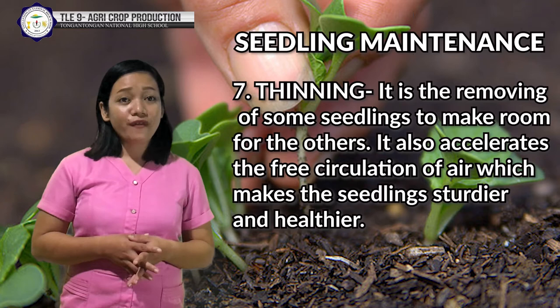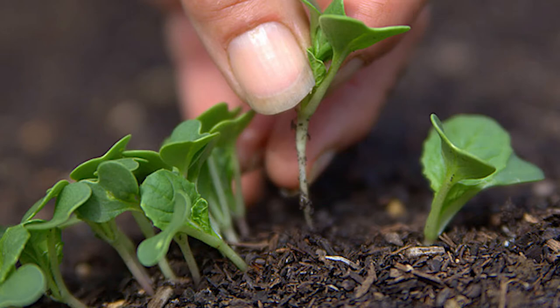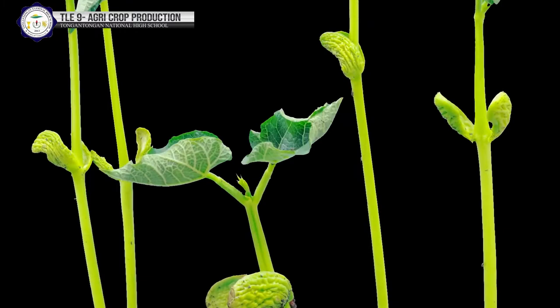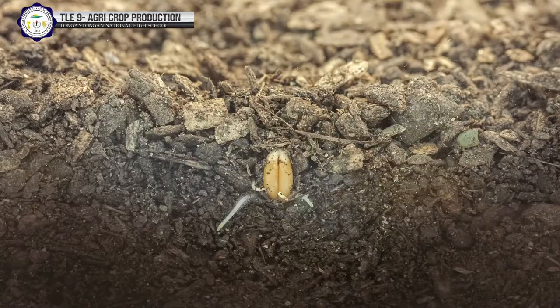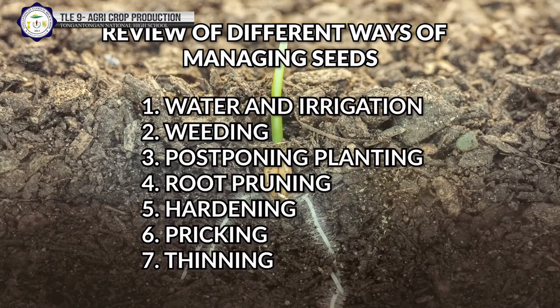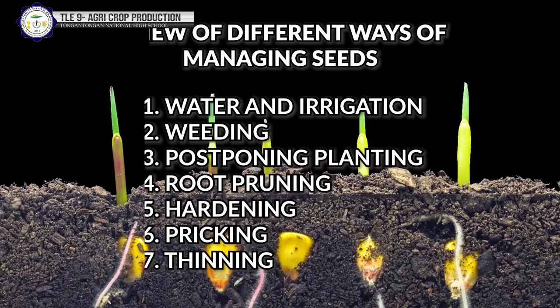Before we discuss the next subtopic — seedling protection — let us recall the different ways of managing seedlings mentioned earlier. They are: water and irrigation, weeding, postponing planting, root pruning, hardening, pricking, and thinning.